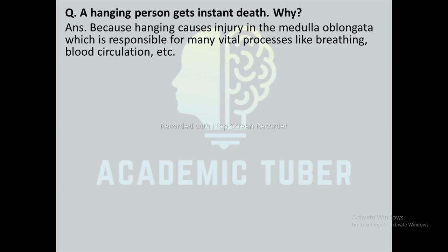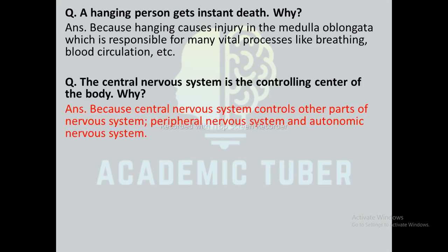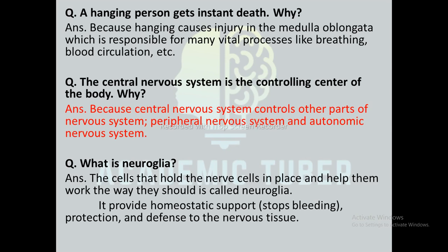Why does a hanged person get instant death? Because hanging causes injury to the medulla oblongata, which is responsible for vital processes like breathing and blood circulation. Why is the central nervous system the controlling center of the body? Because the central nervous system controls all parts of the nervous system — the peripheral nervous system and autonomic nervous system. What is neuroglia? The cells that host nerve cells and help them function properly; neuroglia provides homeostatic support, protection, and defense to nervous tissue.